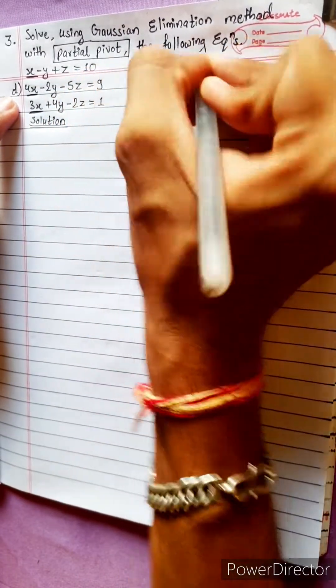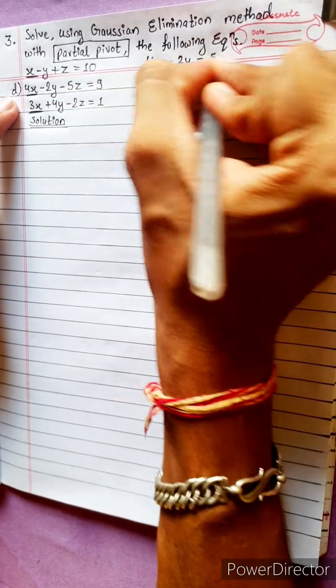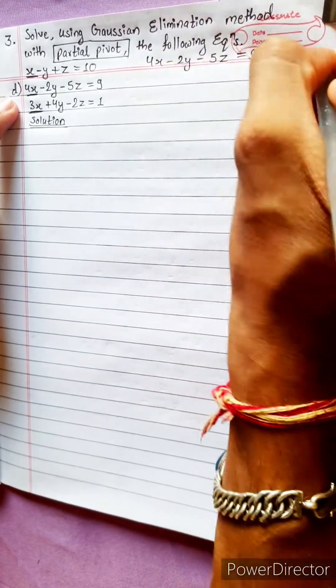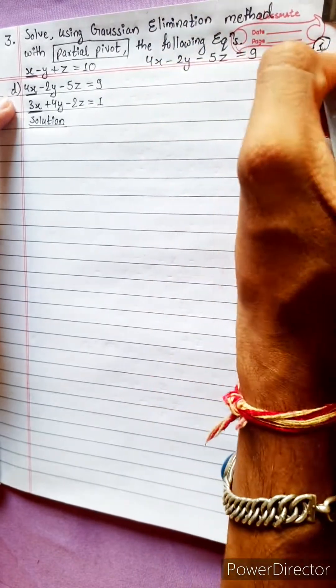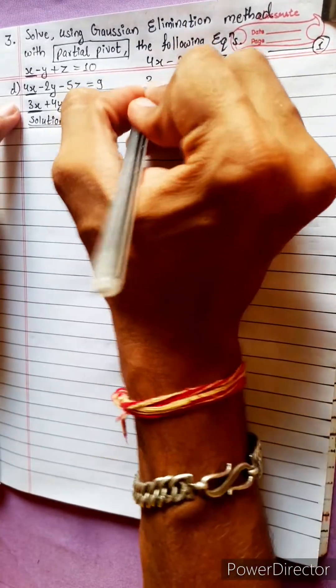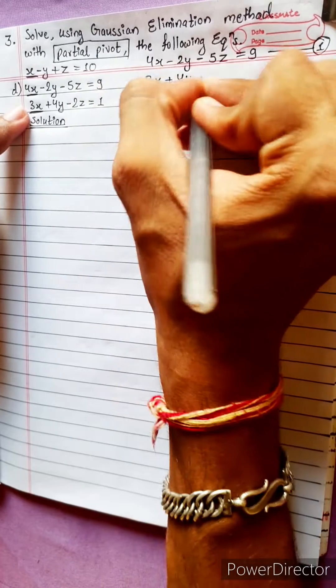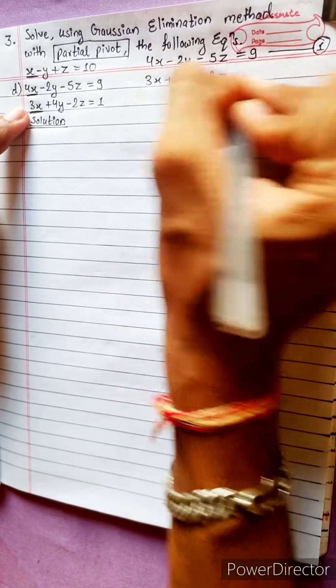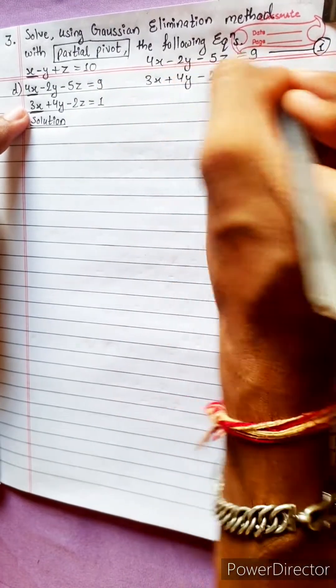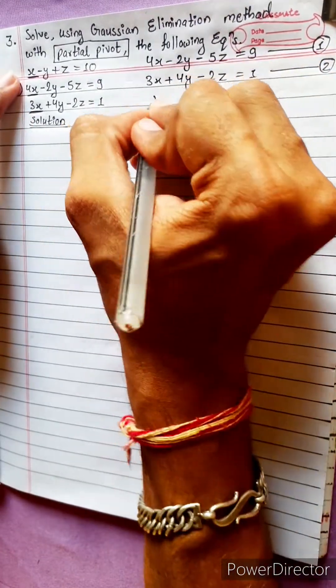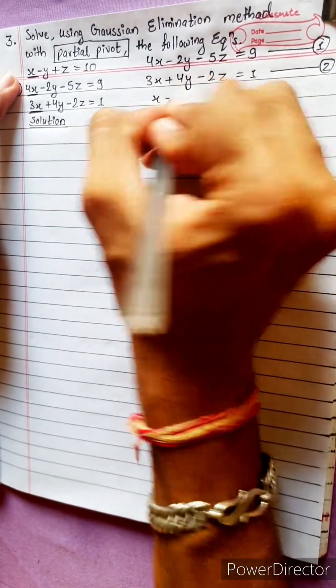The three equations are: Equation 1: 4x minus 2y minus 5z equals 9. Equation 2: 3x plus 4y minus 2z equals 1. Equation 3: x minus y plus z equals 10.